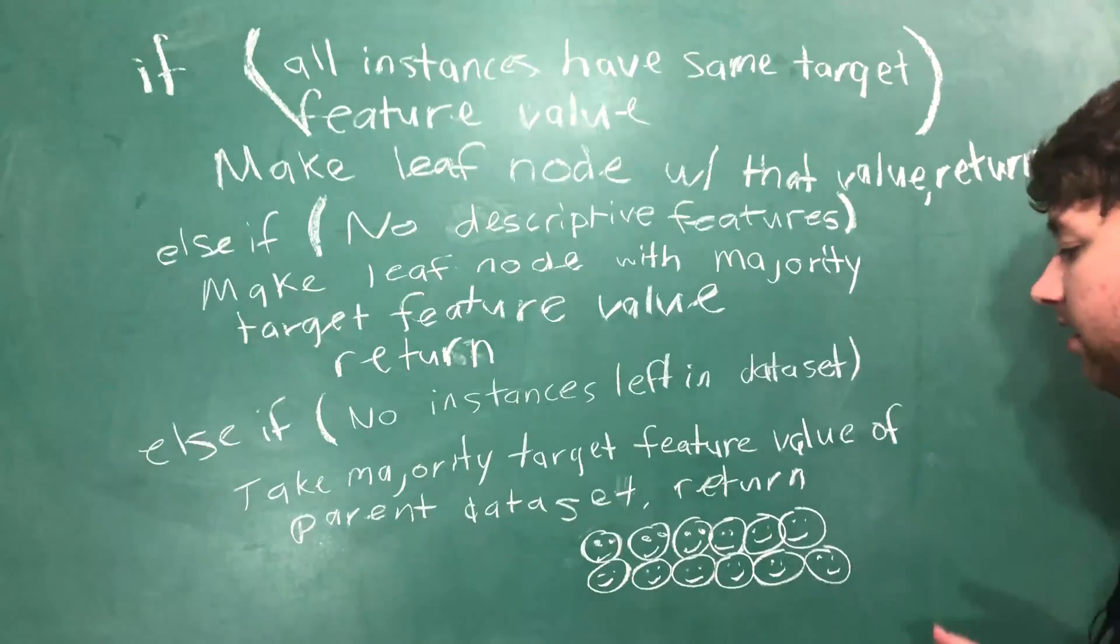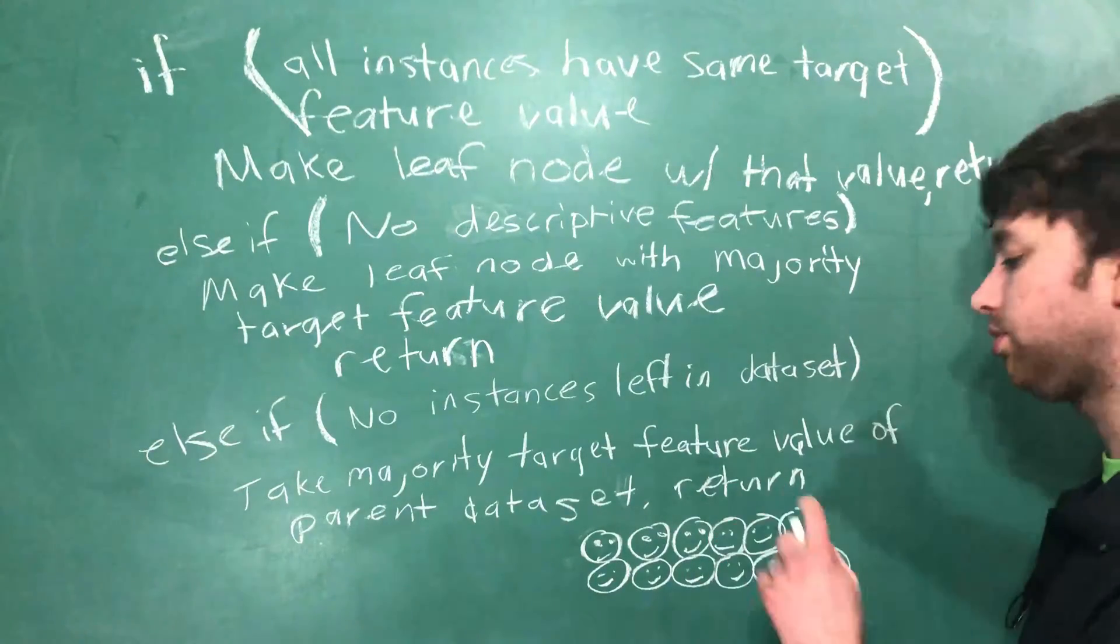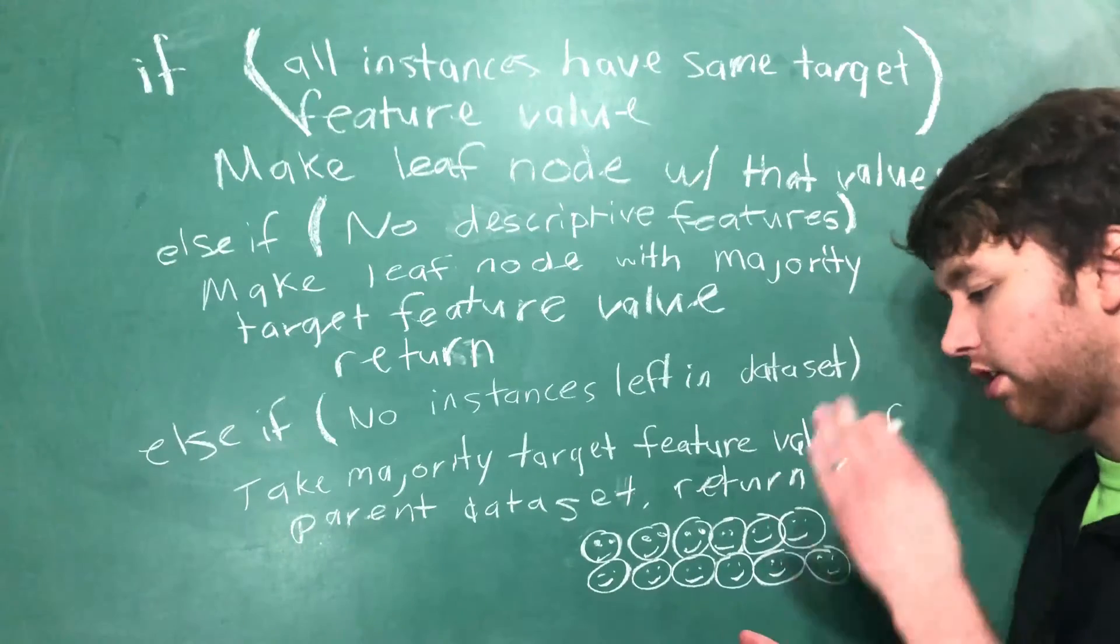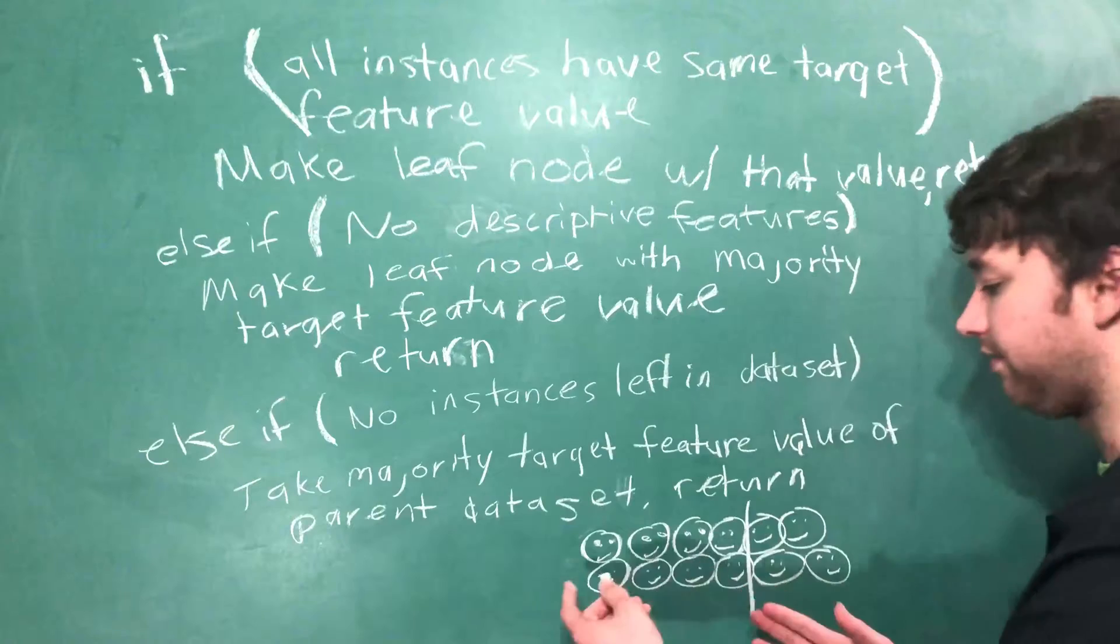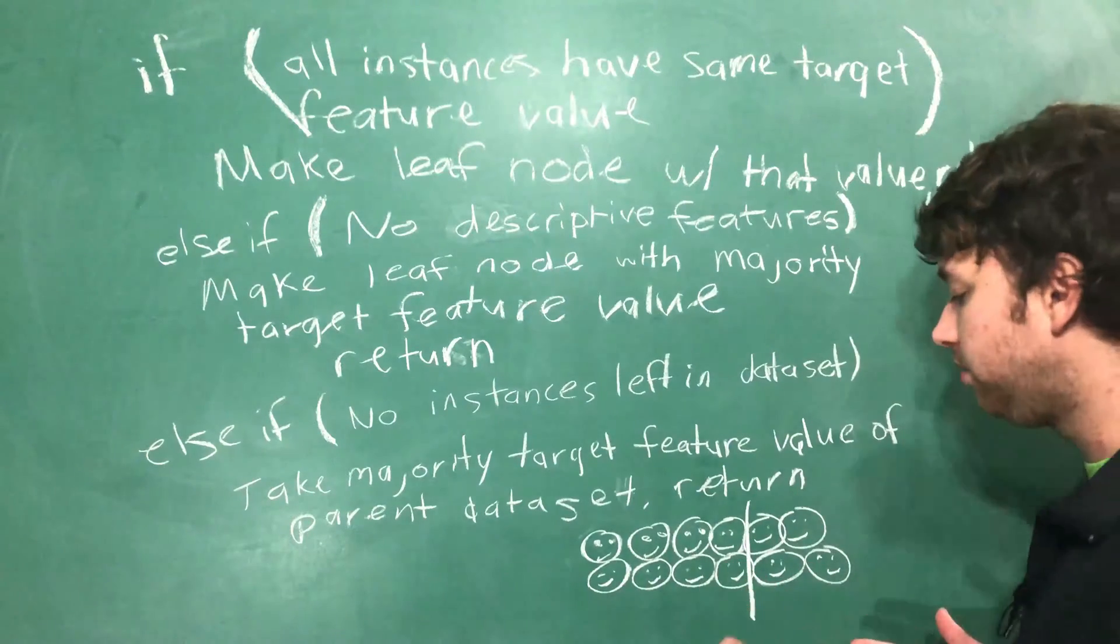Here is our data set and we start going through this algorithm and we're splitting on different descriptive features. We take age, we split everyone who's under 50 and above 50, and then we do it again.